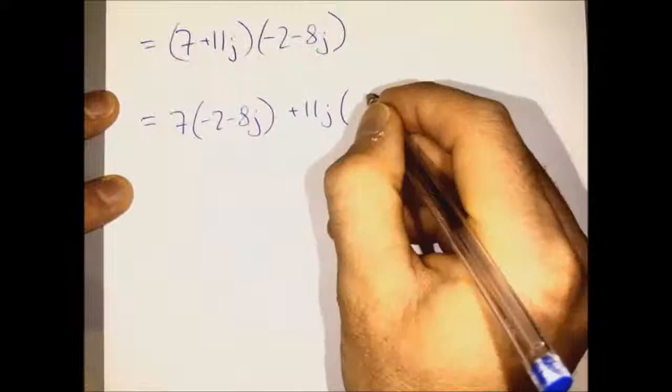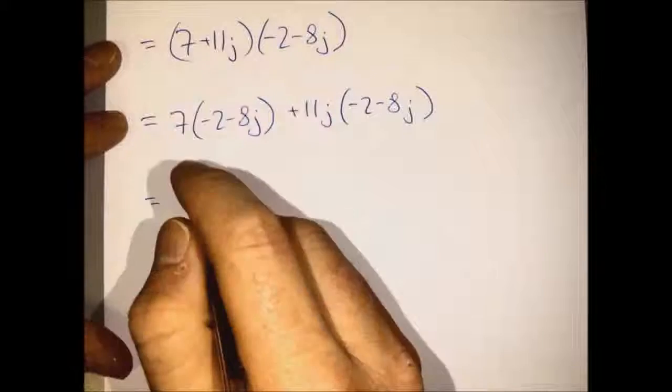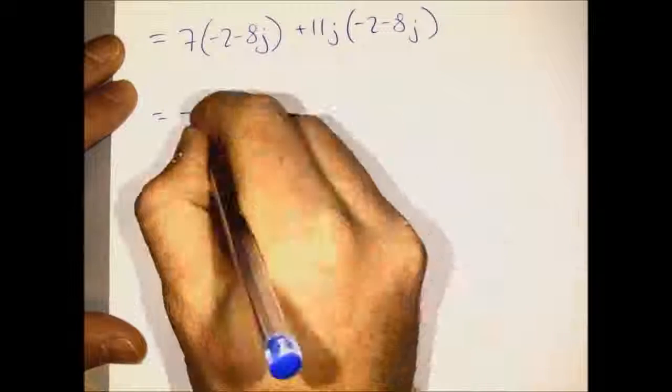We multiply them out, split the first bracket so we have 7 times the second bracket plus 11J times the second bracket.